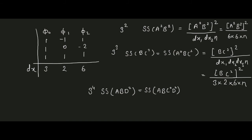To find the divisor for sum of squares more easily, let us consider the table of coefficients for orthogonal polynomials. Here φ₀, φ₁, φ₂ are orthogonal polynomials with coefficients: under φ₀ it is 1, 1, 1; under φ₁ it is -1, 0, +1; and under φ₂ it is +1, -2, +1. These coefficients are mutually orthogonal. The sum of squares of these coefficients, written as dx, are: under φ₀ the dx is 3; under φ₁ the dx is 2; and under φ₂ the dx is 6.